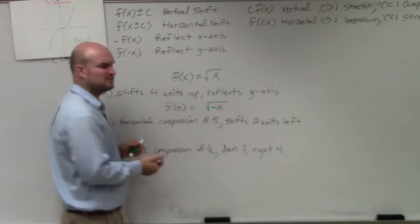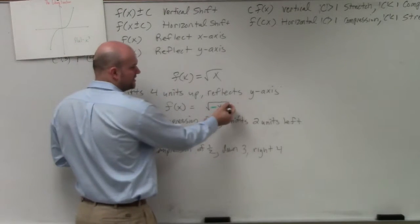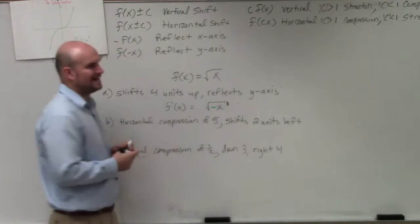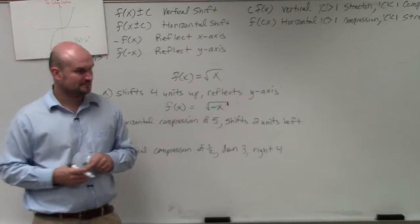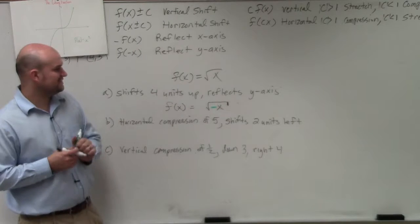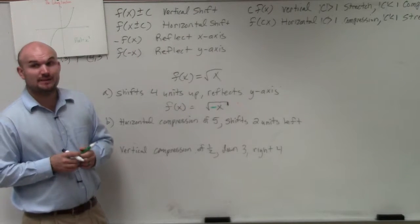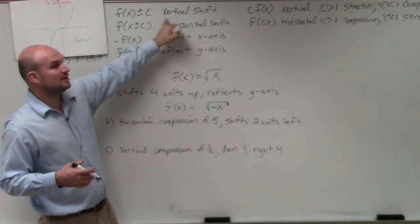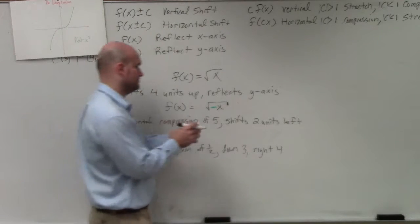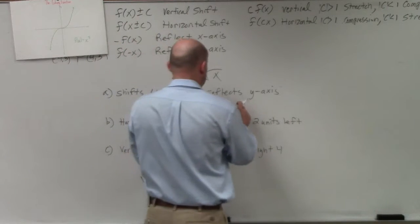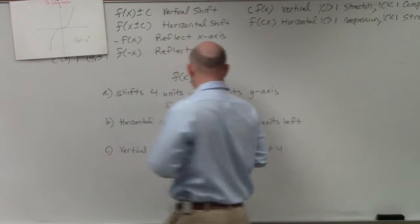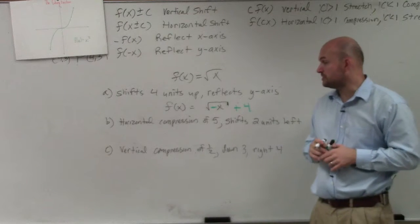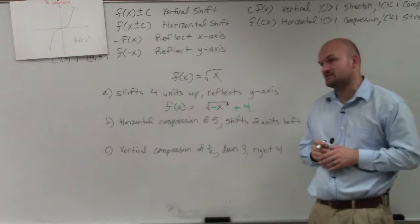Sometimes we show that the function, our square root, is denoted by just putting a little line down there. The graph is shifting four units up, which means I need to add a number outside of the function. So my function is f of x equals square root of negative x plus 4.